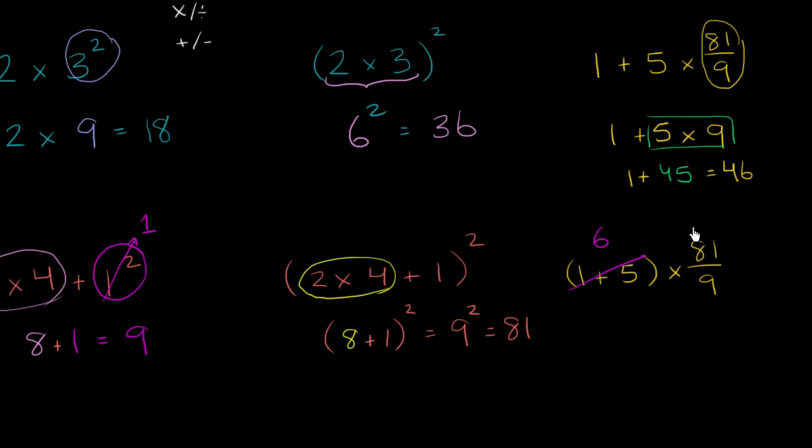And then we have this 81 over 9, which is 9. So this simplifies to 6 times 9, which of course is equal to 54.